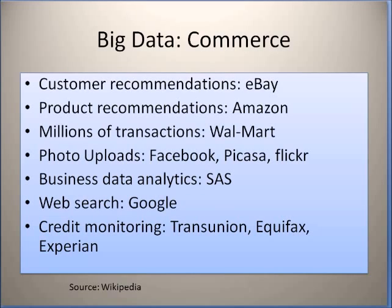The next popular example of applications of statistical methods is the analysis of large amounts of data in commercial applications. For example, eBay makes customer recommendations based on the commercial history of customers, that is based on their selling and buying records. Amazon also makes product recommendations for customers through their product history or search history. Walmart uses statistical methods for analyzing millions of transactions throughout the world in their super stores.